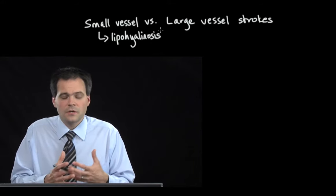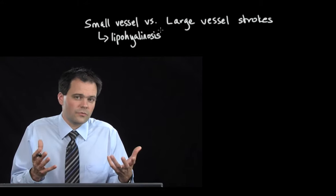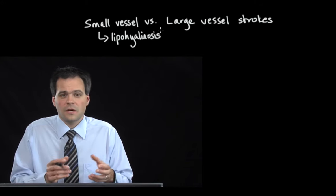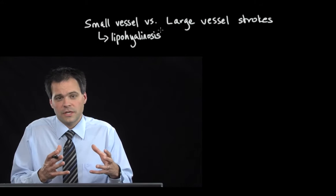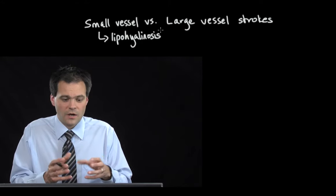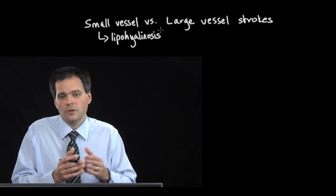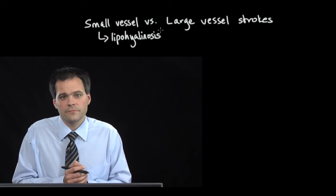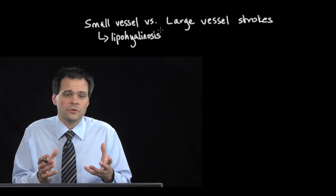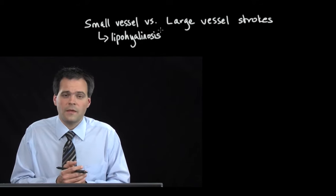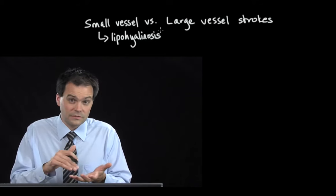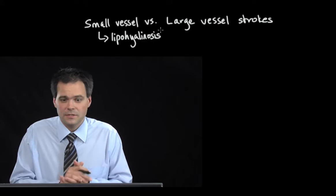At some point — and we don't really know exactly what occurs when this happens — the vessel gets so damaged that it closes off and distal to that you get a small infarct. These are also called lacunar strokes because they're very small and on pathology they look like little lakes inside the brain.